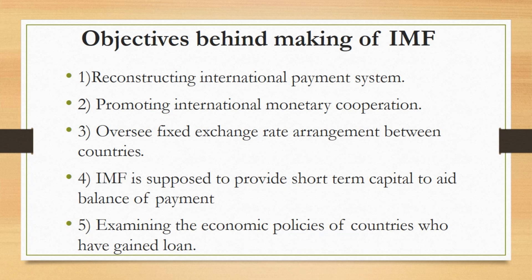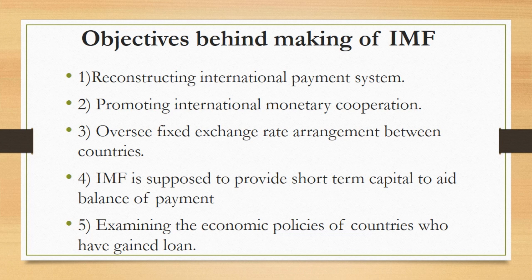Fourthly, IMF is supposed to provide short-term capital to aid balance of payments. If Pakistan sells goods worth Rs. 500 to a country and buys goods worth Rs. 500 from another country, there is balance of payment. Simply put, if the imports of a country are equal to its exports, there will be balance of payment. If imports are more than exports, the situation is called a trade deficit, and if exports are more than imports, there is a trade surplus. IMF was tasked to look into matters of balance of payment so that any trade deficit may not harm the world economy.